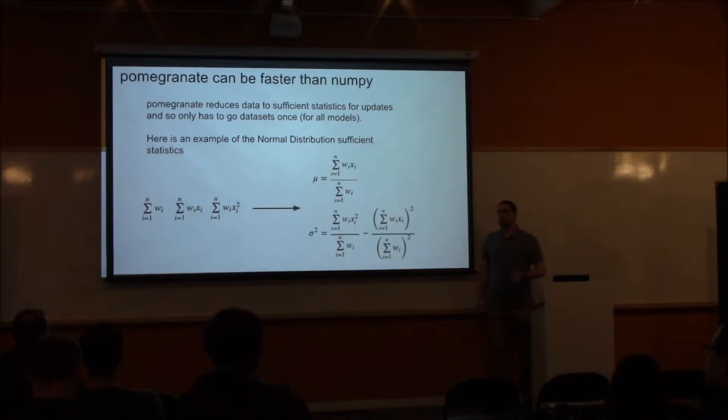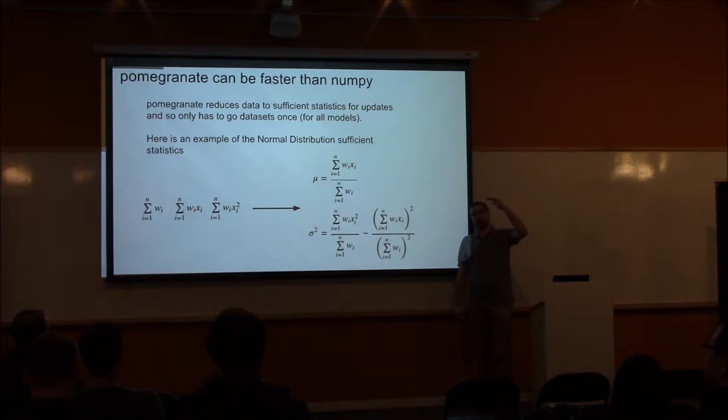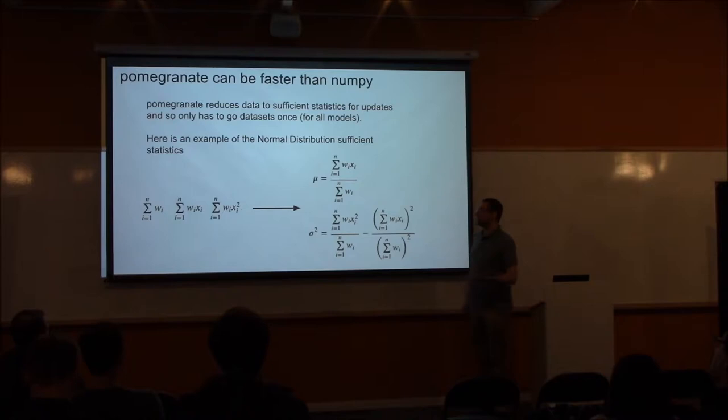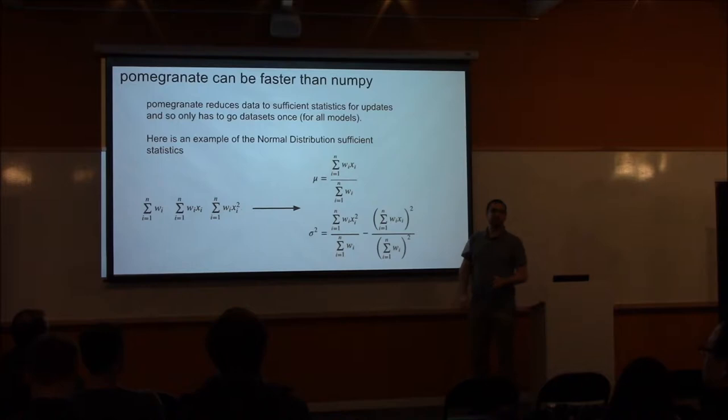One of the other reasons pomegranate is so fast is because we use summary statistics to update not just our distributions but all of the models. These summary statistics allow us to go through the data only once. Instead of going through and calculating the mean first and then the covariance, we can calculate both at the same time. For a simple normal distribution, the sufficient statistics are the sum of the weights, the sum of the weighted points, and the sum of the weighted points squared. If we have these three numbers, no matter how much data we've seen, we can exactly recalculate the mean and standard deviation of that entire data set.